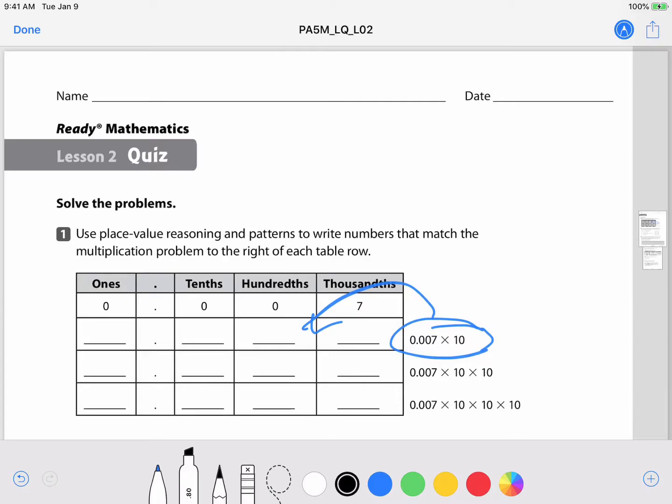I can use my highlighter tool to highlight parts of the directions and I can use a pencil tool to write my name at the top.